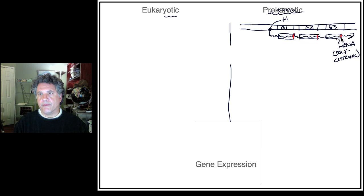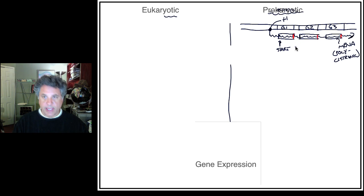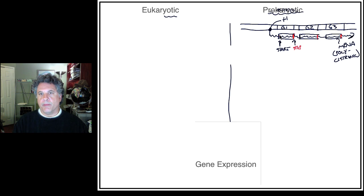We have three different protein coding regions in the same messenger RNA. For each one we have a start and a stop, and translation will begin at the start signals and stop when codons for the termination of translation are encountered.